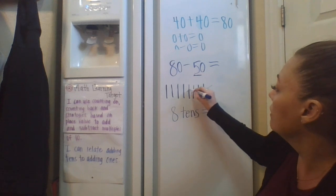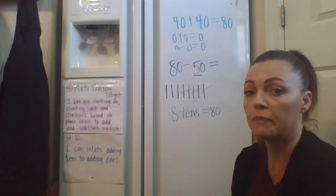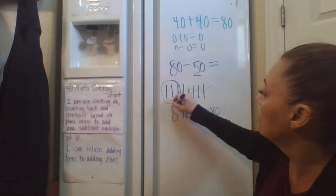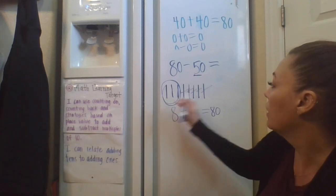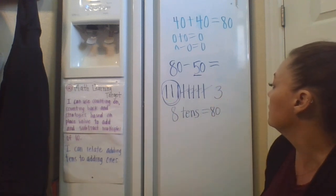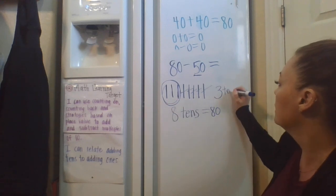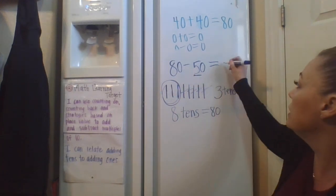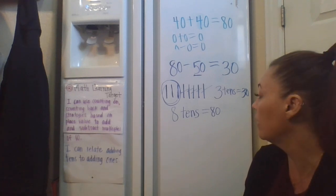I just subtracted 50 from that 80. So this is what I have left. How many lines do I have right there? I have 3 tens. 10, 20, 30. 3 tens equals 30. So we know that 80 minus 50 is 30. Okay?